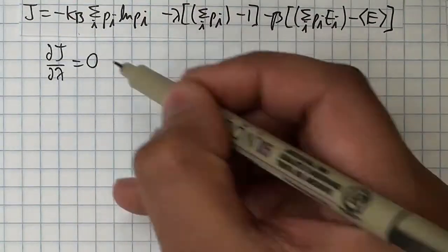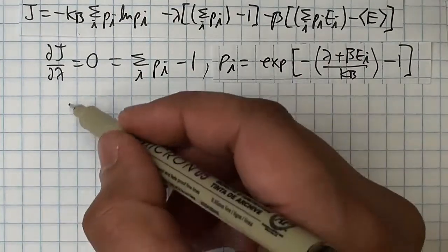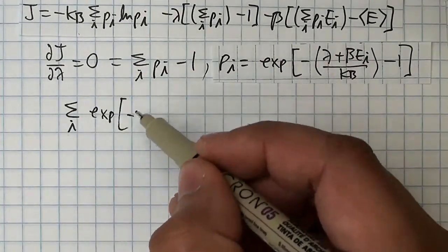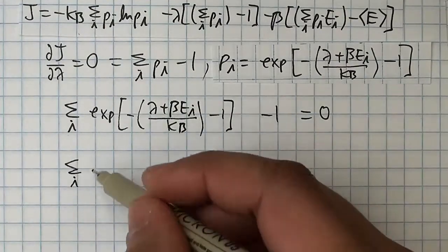Alright, on to the next derivative of the Lagrange function, partial j partial lambda. We'd like to solve for lambda to eliminate it from pi. If you do so, you'll get some complicated thing with the log of a sum. I'd like to show you a shortcut.